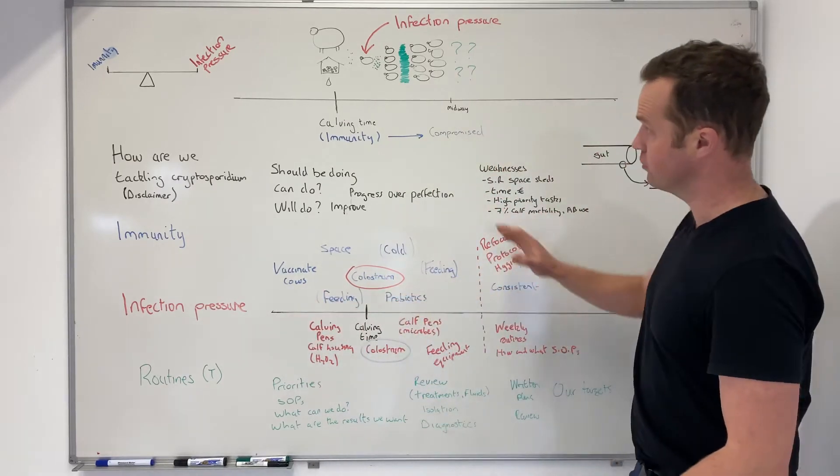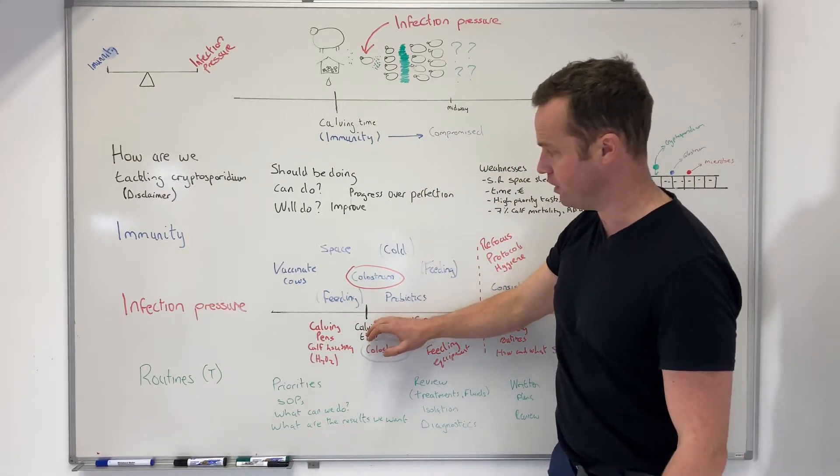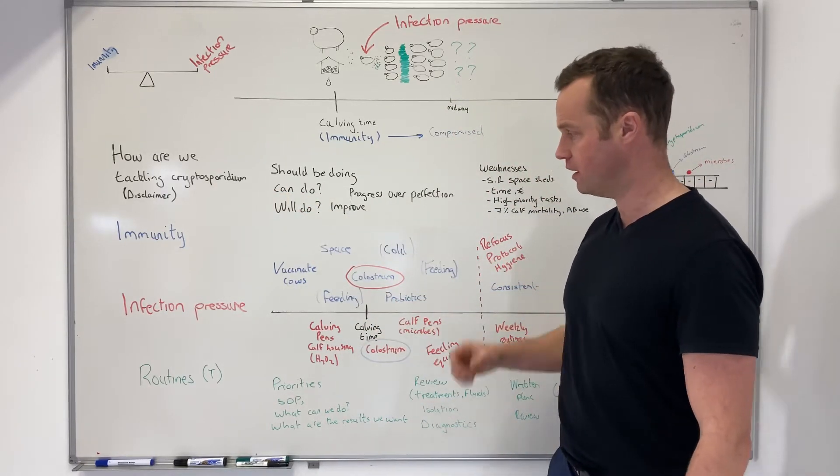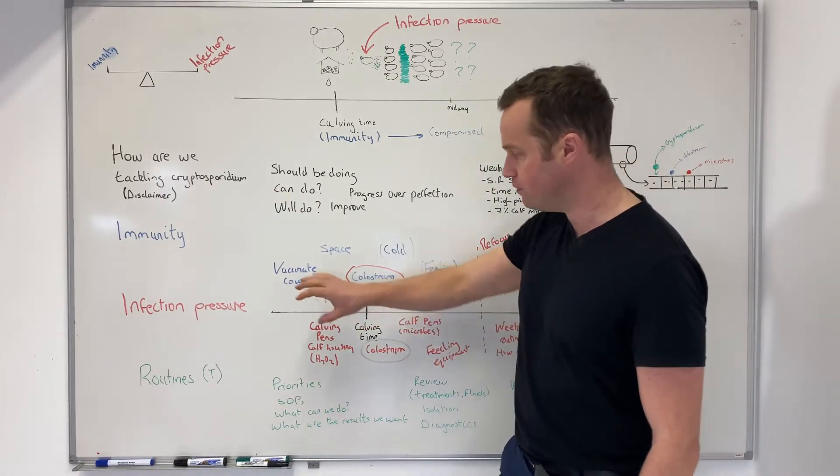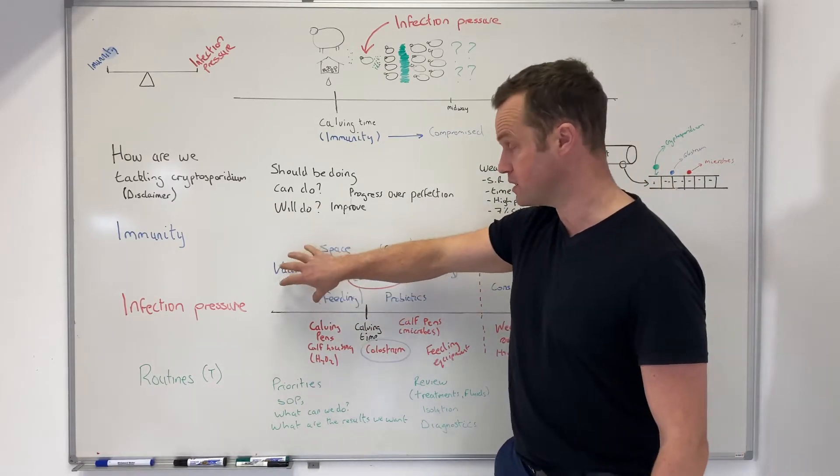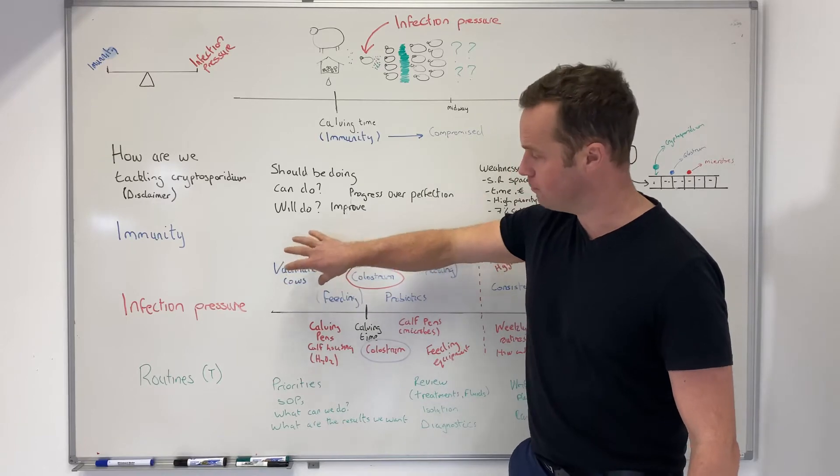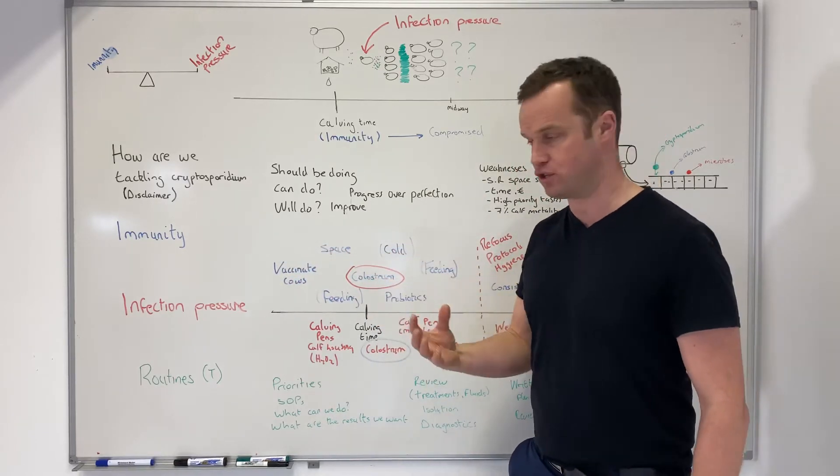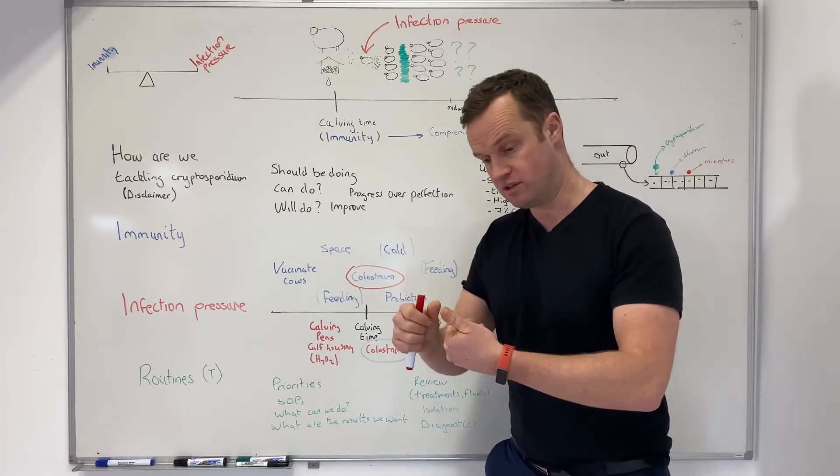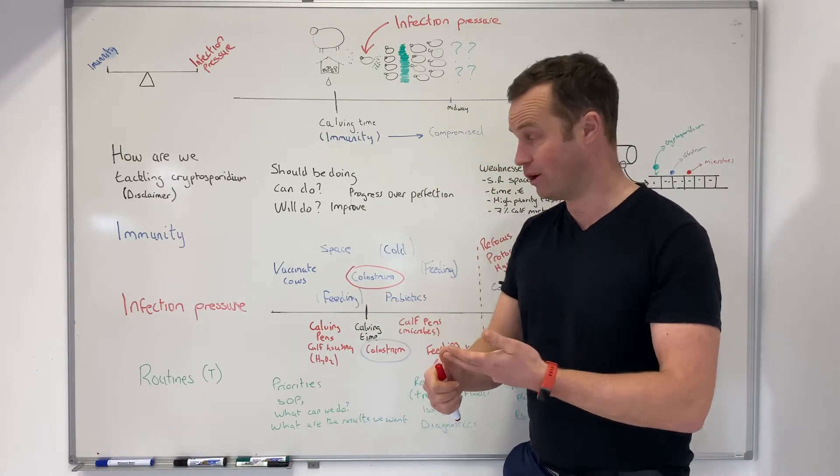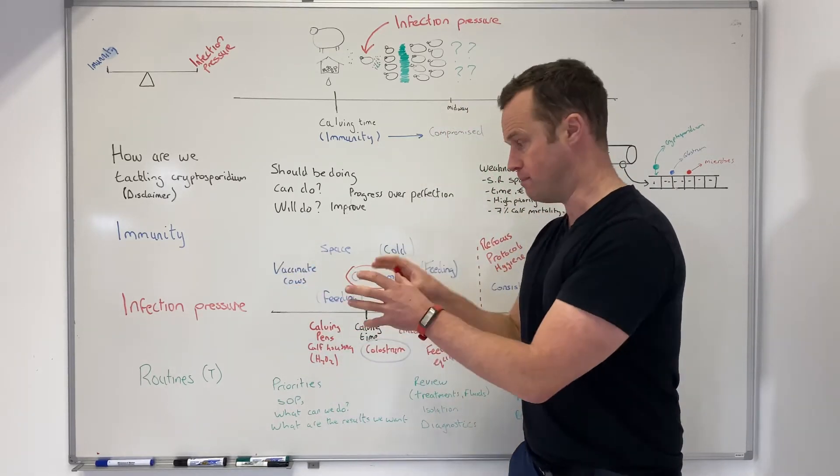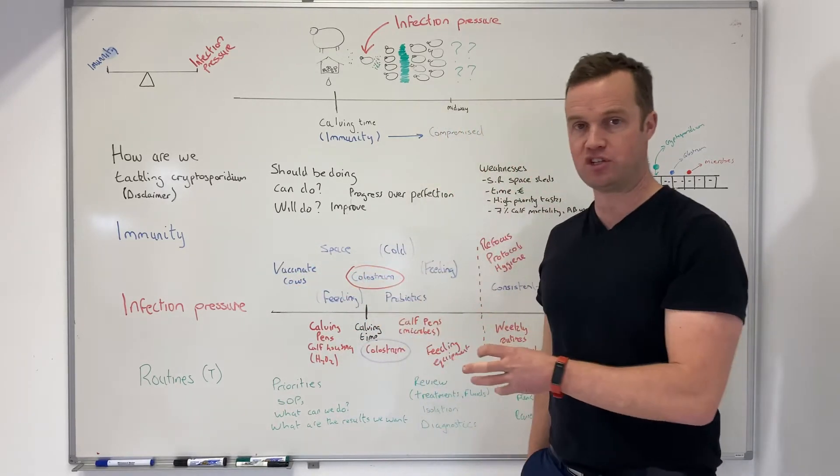On our timeline here, we've got calving time. Let's focus on what we're going to do from an immunity perspective, maximizing immunity. The cows have been vaccinated with RotaVac Corona a couple of weeks ago, looking to boost the immunity of colostrum. A lot of times with cryptosporidium, there are secondary agents like rotavirus, coronavirus, and E. coli causing challenges. So we're vaccinating the cows to stimulate the immunity in this all-important colostrum.